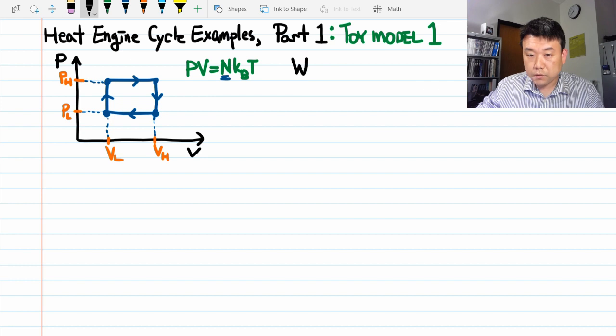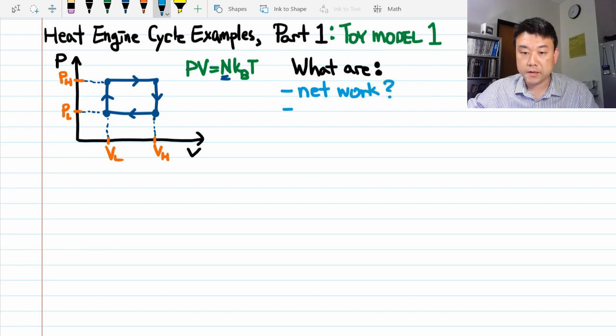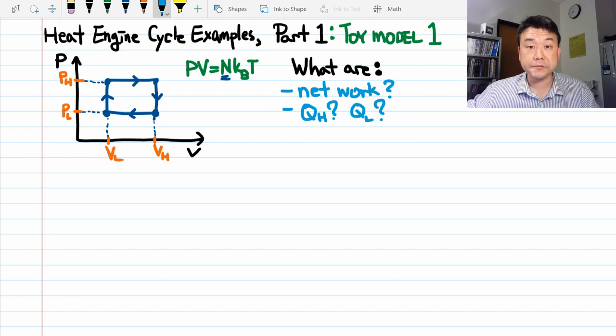So here are the questions that we would ask in analyzing any heat engine cycle. They are, what is the network done? It's kind of important. It points at the entire purpose of a heat engine. And for reasons we'll see later, it's important to know how much heat was transferred into the system. We'll call it QH for heat transfer at high temperature. And also for reasons we'll see later, the heat output from the system is also important, which will label QL, heat exchange at low temperature.